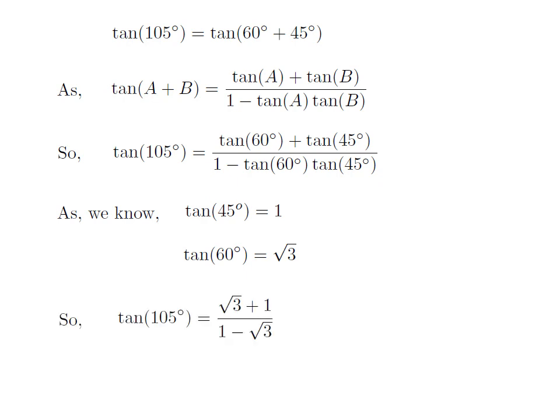After replacement of the above values in the expression for tangent of 105 degrees, we get tangent of 105 degrees equal to square root of 3 plus 1 in the numerator. In the denominator, it is 1 minus square root of 3 into 1, which becomes 1 minus square root of 3.